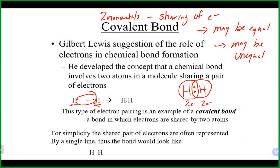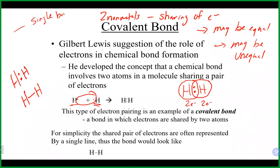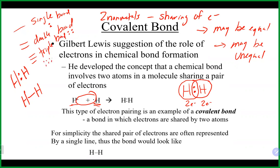You can draw the sharing of electrons two ways: with dots or with a single line, which represents a single bond. A single bond is the sharing of two electrons. Two lines is a double bond, representing the sharing of four electrons or two pairs. A triple bond is three lines, representing the sharing of six electrons.